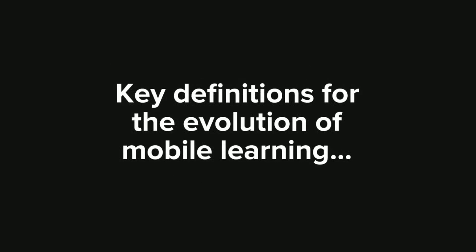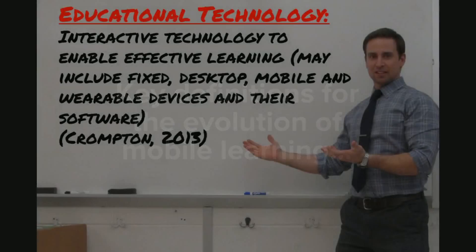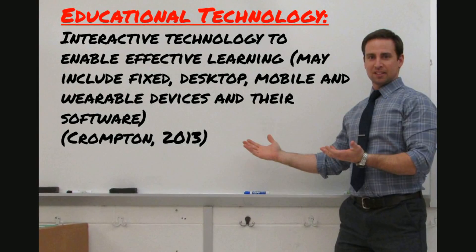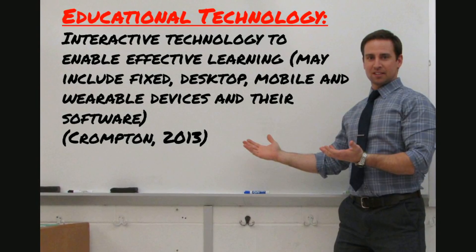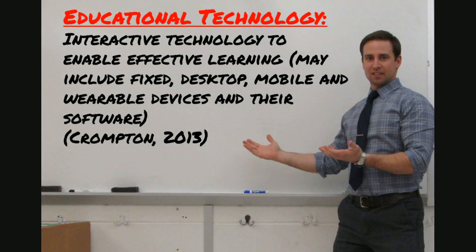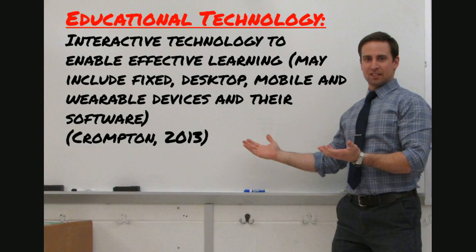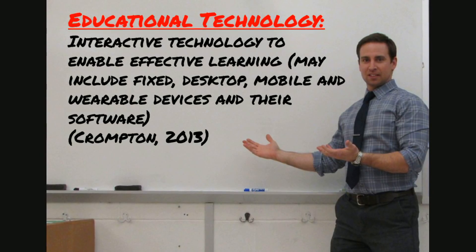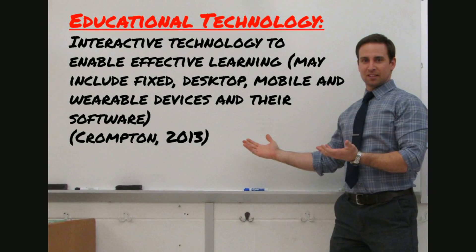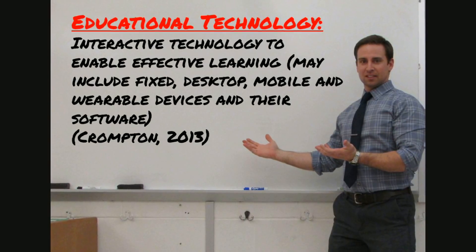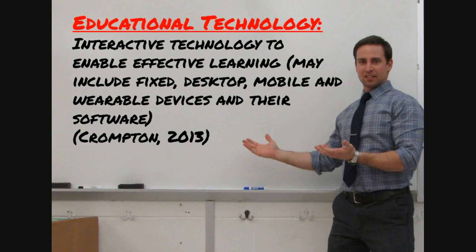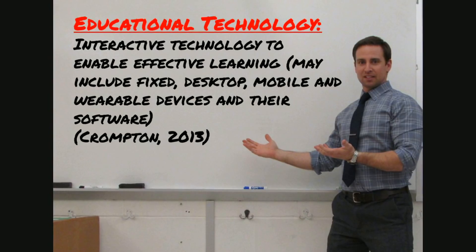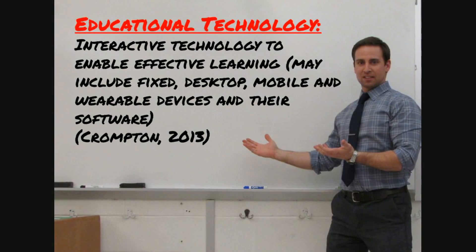There are several key definitions for understanding the evolution of mobile learning. The first is educational technology. This is the interactive technology to enable effective learning. It may include fixed desktop, mobile, and wearable devices and their software.